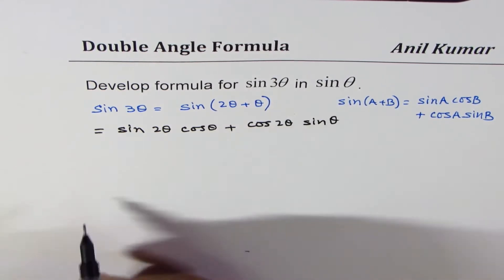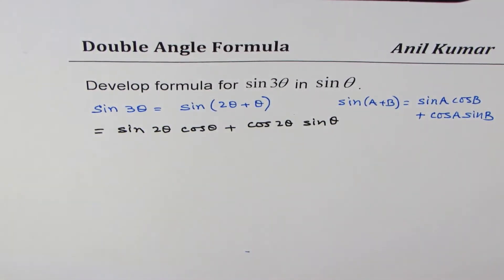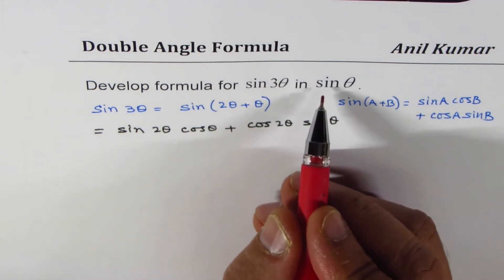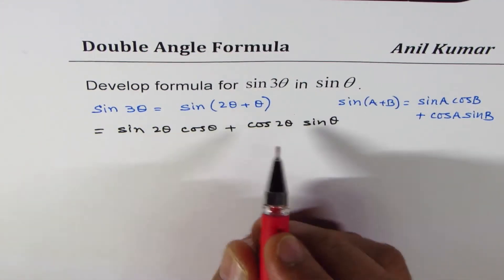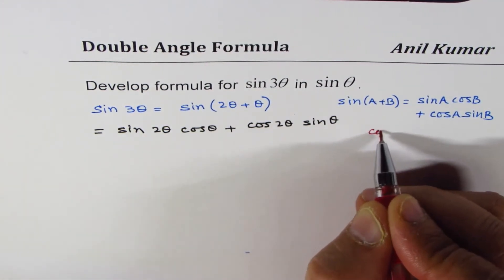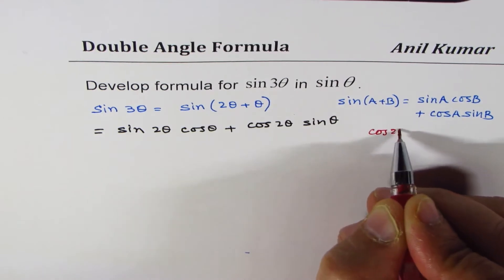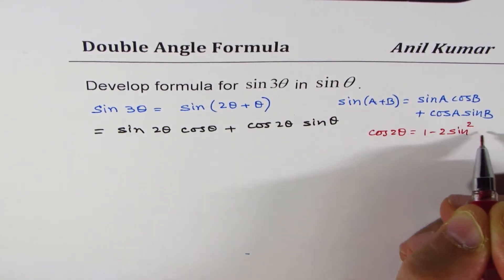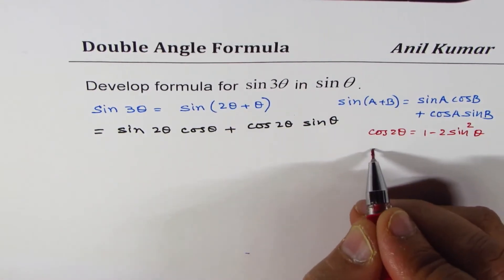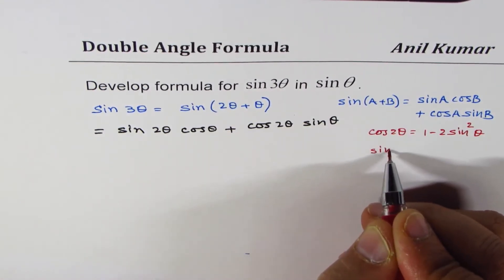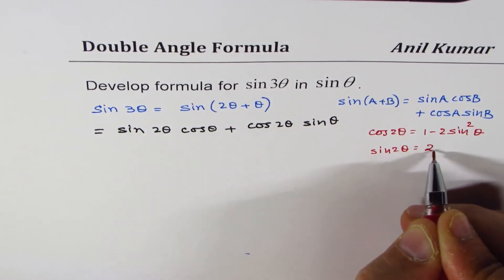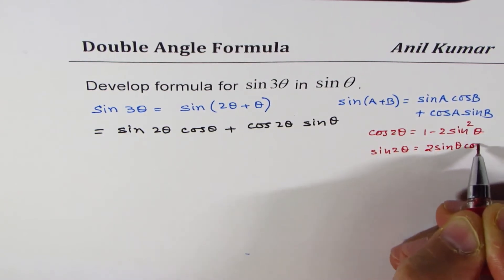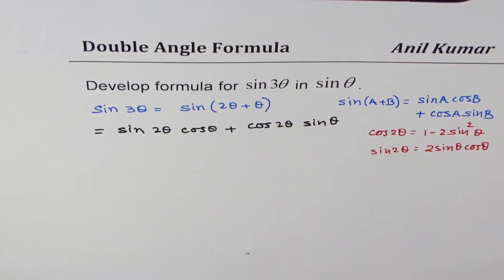We can write this as sin 2 theta cos theta plus cos 2 theta sin theta. Now we can use the double angle formula. Since we want to write every term in sin theta, we will use cos 2 theta as 1 minus 2 sin squared theta, and for sin 2 theta we have only one formula which is 2 times sin theta cos theta.